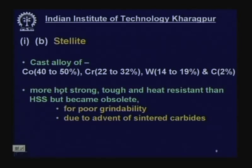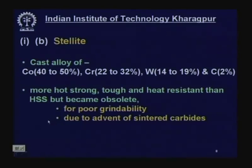Even such a good tool material became obsolete within 10 to 15 years for two reasons. First, poor grindability — unlike high speed steel, stellite was very difficult to resharpen by grinding, and cost gradually increased. As soon as cemented carbide came into being, use of stellite was totally stopped.